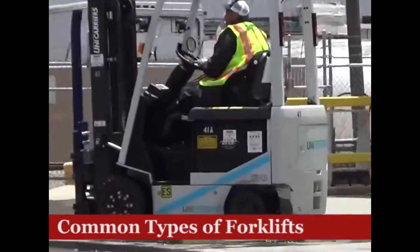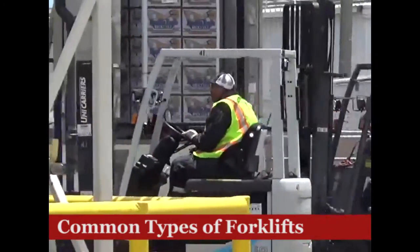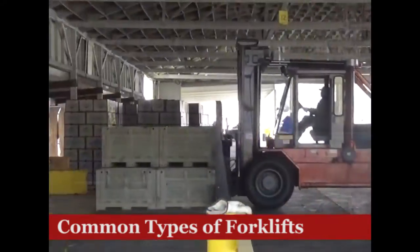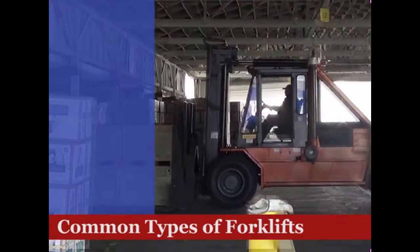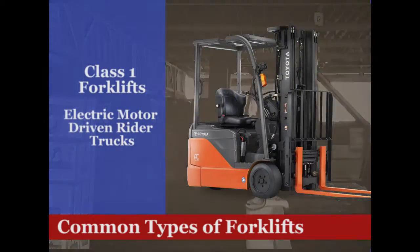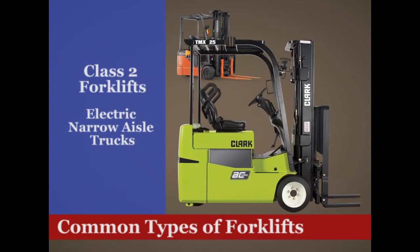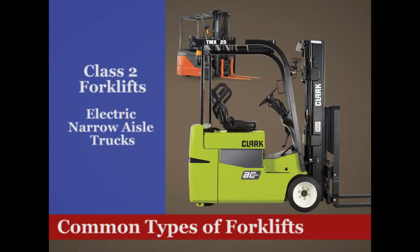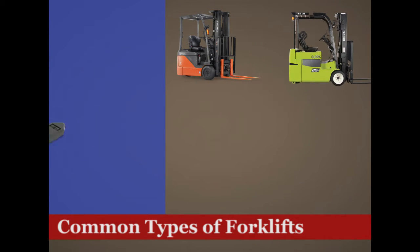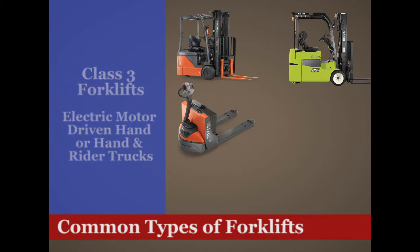There are many different types of forklifts. They mostly fall into 7 different general classifications. Class 1 are the electric motor driven rider trucks. Class 2 are the electric motor driven narrow aisle trucks. Class 3 are the electric motor driven hand and combination hand and rider trucks.